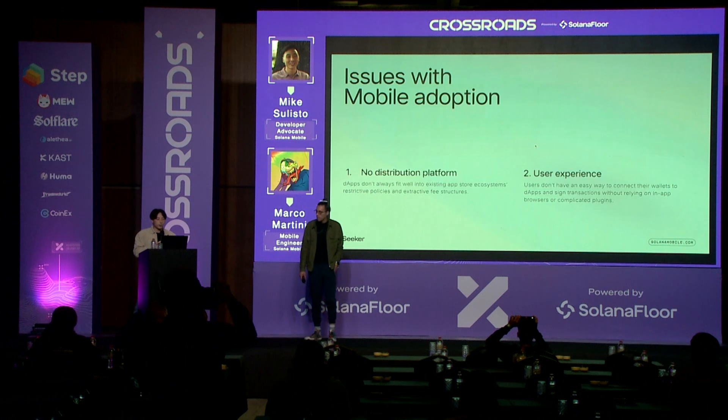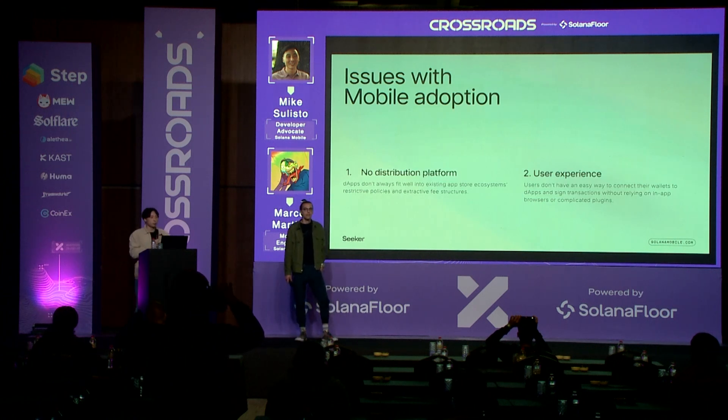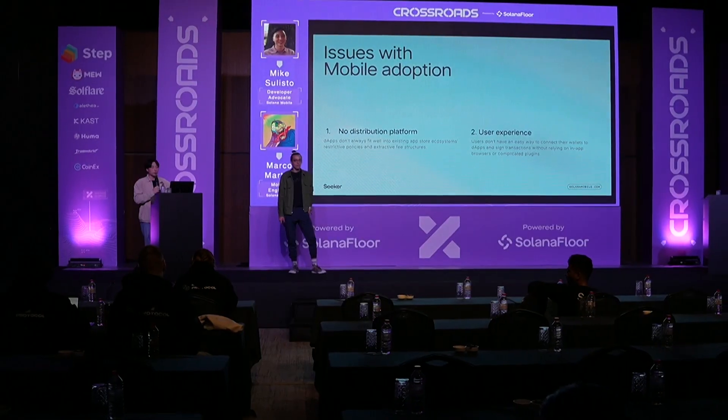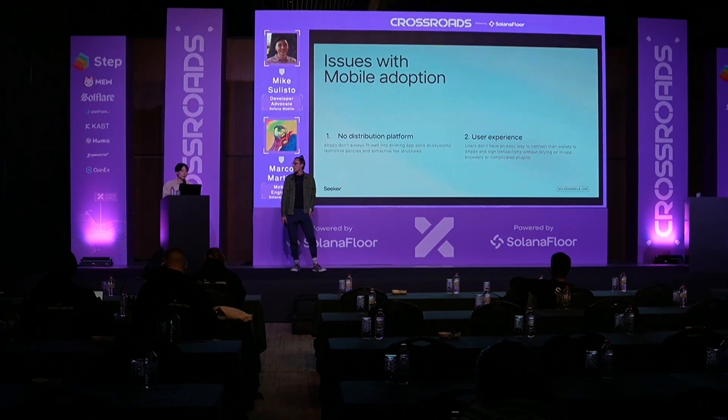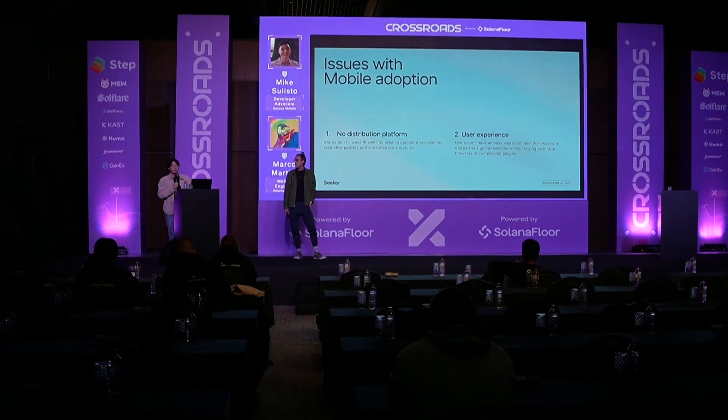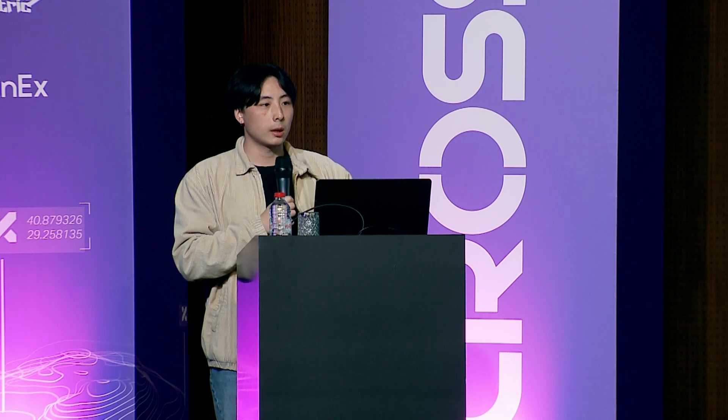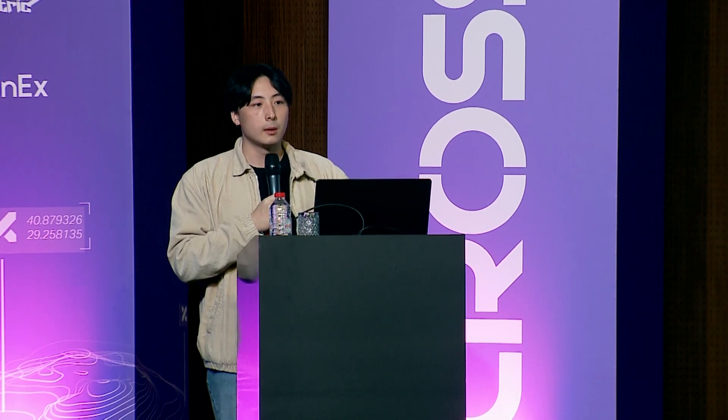There's a reason the world is like that for mobile today. These are the two issues I see with mobile adoption. First, there's no reliable distribution platform for native mobile apps — the Apple and Google app stores are notorious for being hostile to crypto apps. As a developer, you can't spend time and resources building an app only to get rejected at app review. Second is user experience: users don't have a way to connect their app to wallet apps for signing, so they use roundabout methods like in-app browsers or complicated plugins.